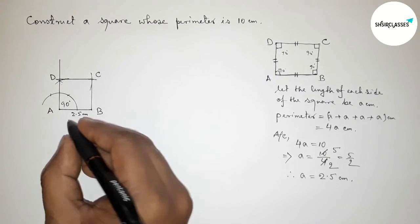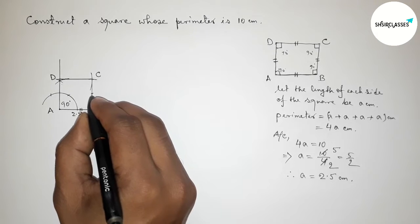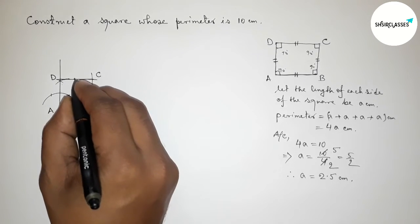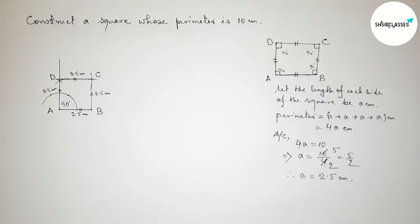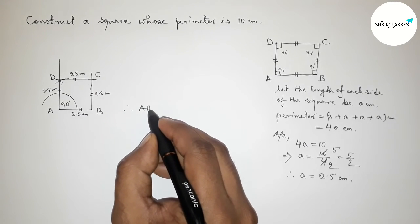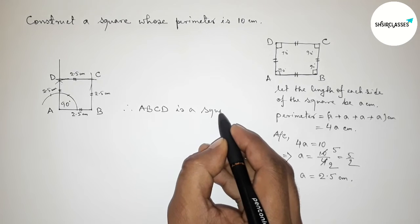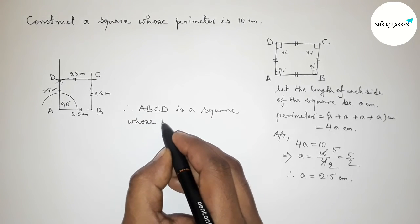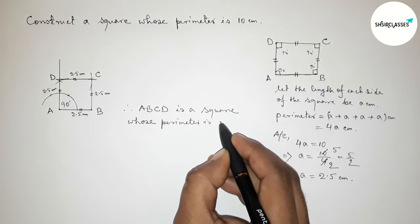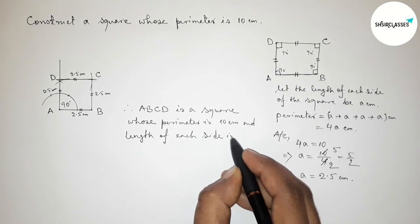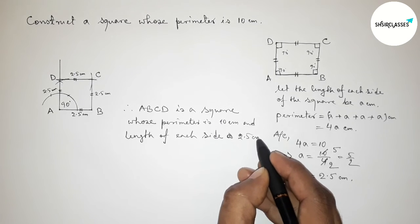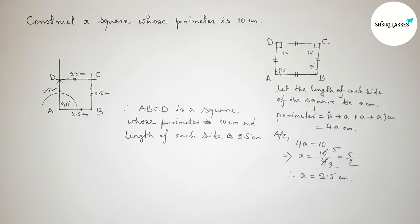All the sides are equal — this side is 2.5 centimeters, this is also 2.5 centimeters, and this is also 2.5 centimeters. Therefore ABCD is a square whose perimeter equals 10 centimeters and the length of each side equals 2.5 centimeters. That's all — thanks for watching. If this video was helpful, please share it with your friends.